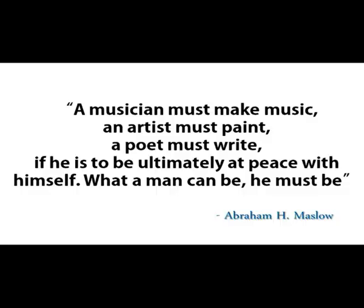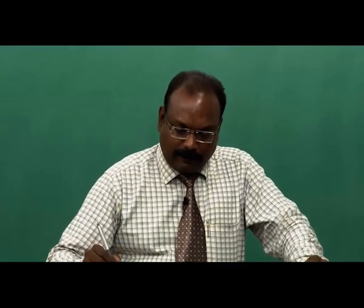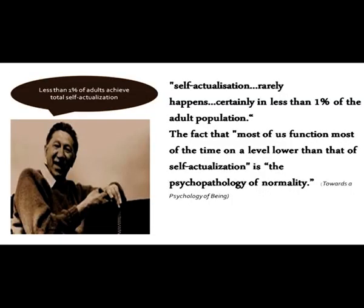Before I conclude, one or two thoughts Maslow wanted us to think about when he introduced self-actualization. He says: a musician must make music, an artist must paint, a poet must write — if he is to be ultimately at peace with himself. What a man can be, he must be. This is what he calls self-actualization. But the interesting fact he also tells us: less than 1 percent of adults achieve total self-actualization. Many people try and want to reach that level, but it is just less than 1 percent of adults who actually achieve this — self-actualization rarely happens.